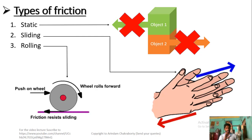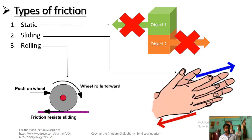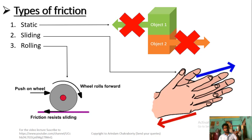Rolling friction occurs when a ball or a car wheel rotates — clockwise or anti-clockwise — and rolls on a surface. Rolling friction has less resistivity compared to sliding friction because the point of contact between the wheel and the surface is very small. Since my palm surface area is much larger than the contact point of a wheel, rolling produces far less friction.